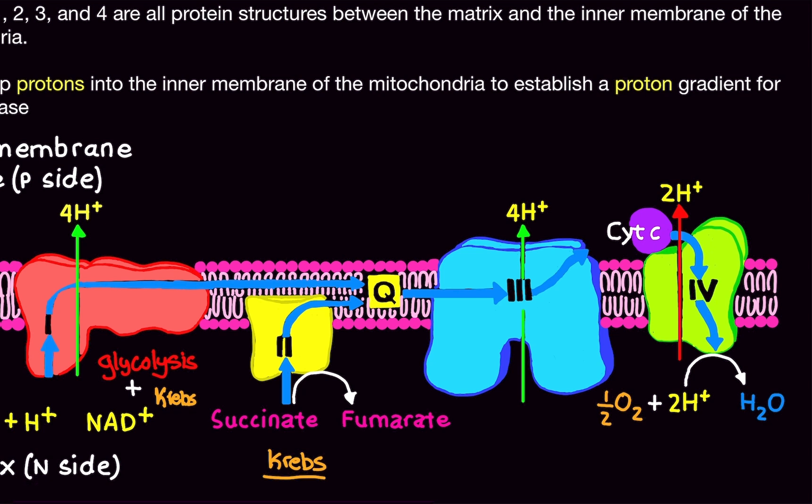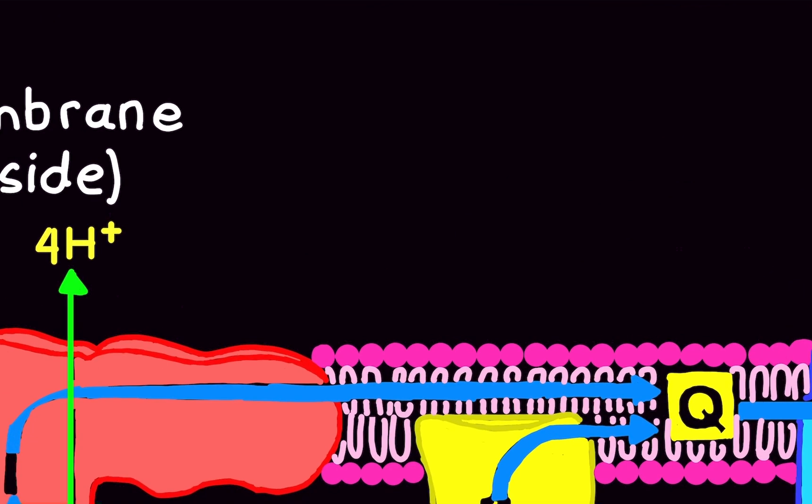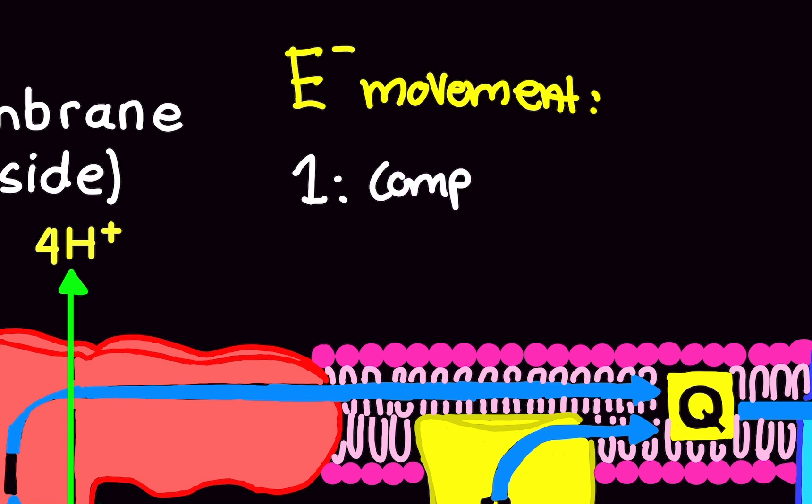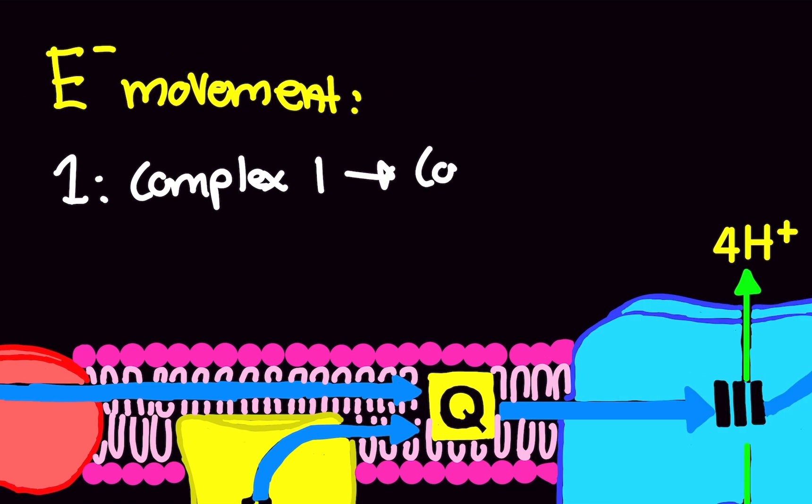And so, you probably heard me right now. I said that electrons are going from 1 to 3 to 4. I did not say it's going from 1 to 2 to 3 to 4. It does not do that. So, let me reiterate that once again. Electron movement. So electron movement has two options. It will either, option 1, it will go from Complex 1 to Complex 3 to Complex 4.